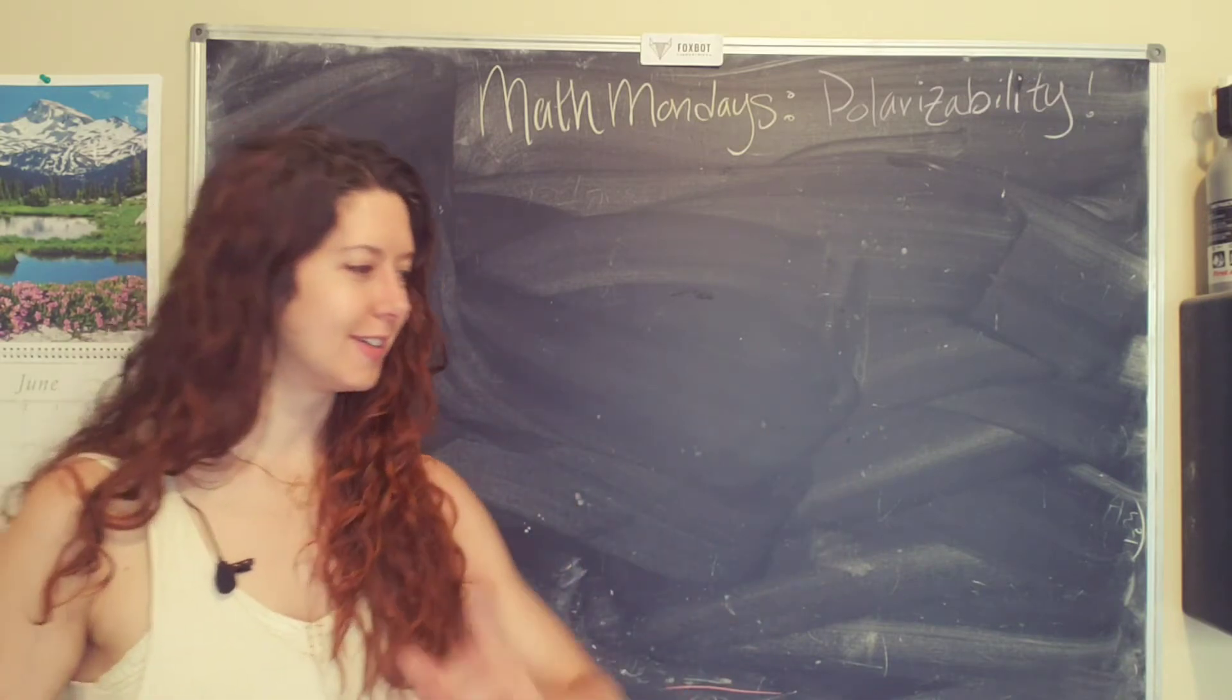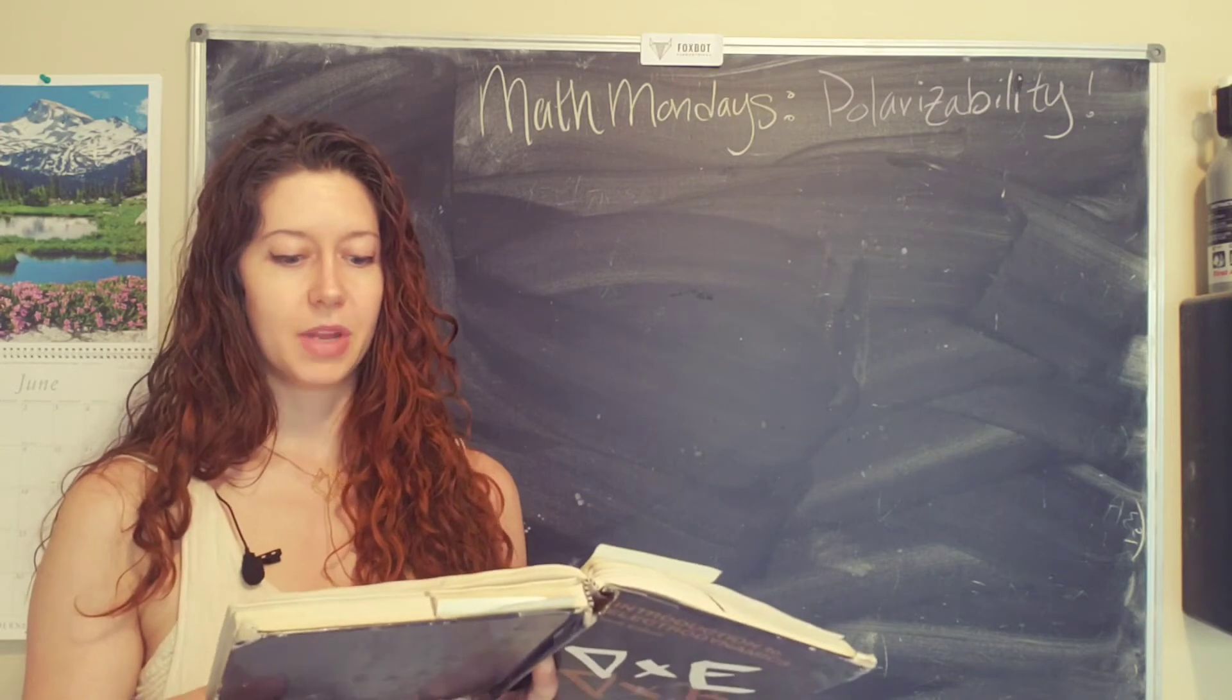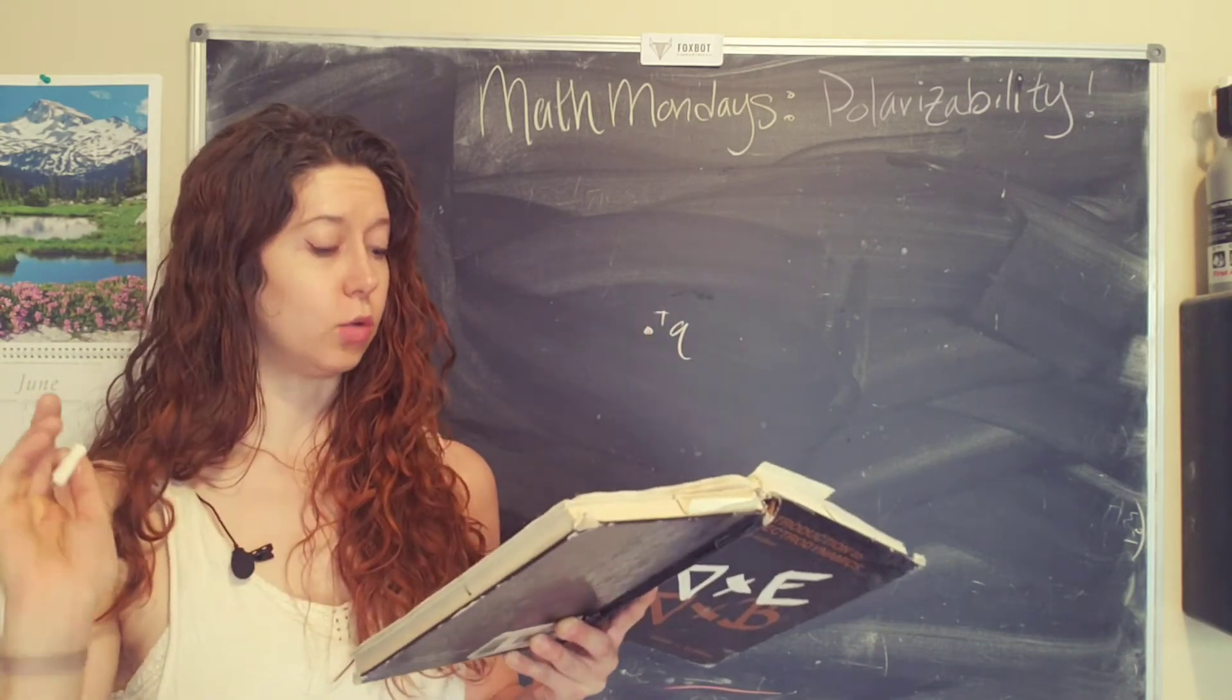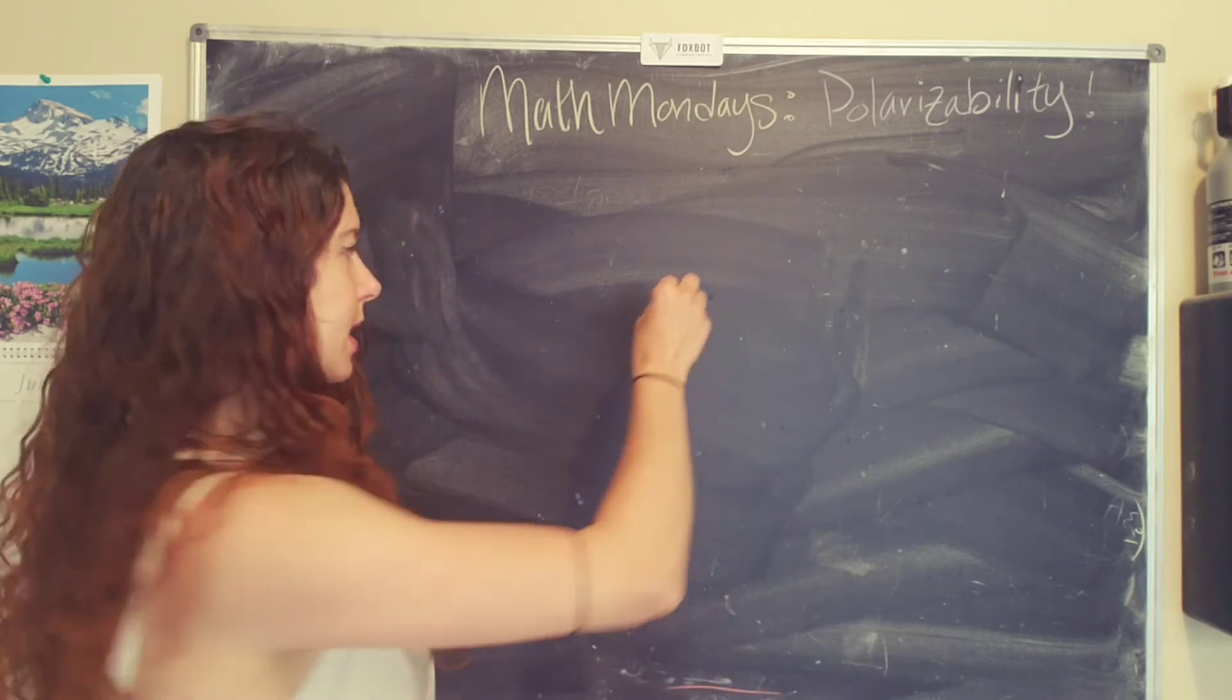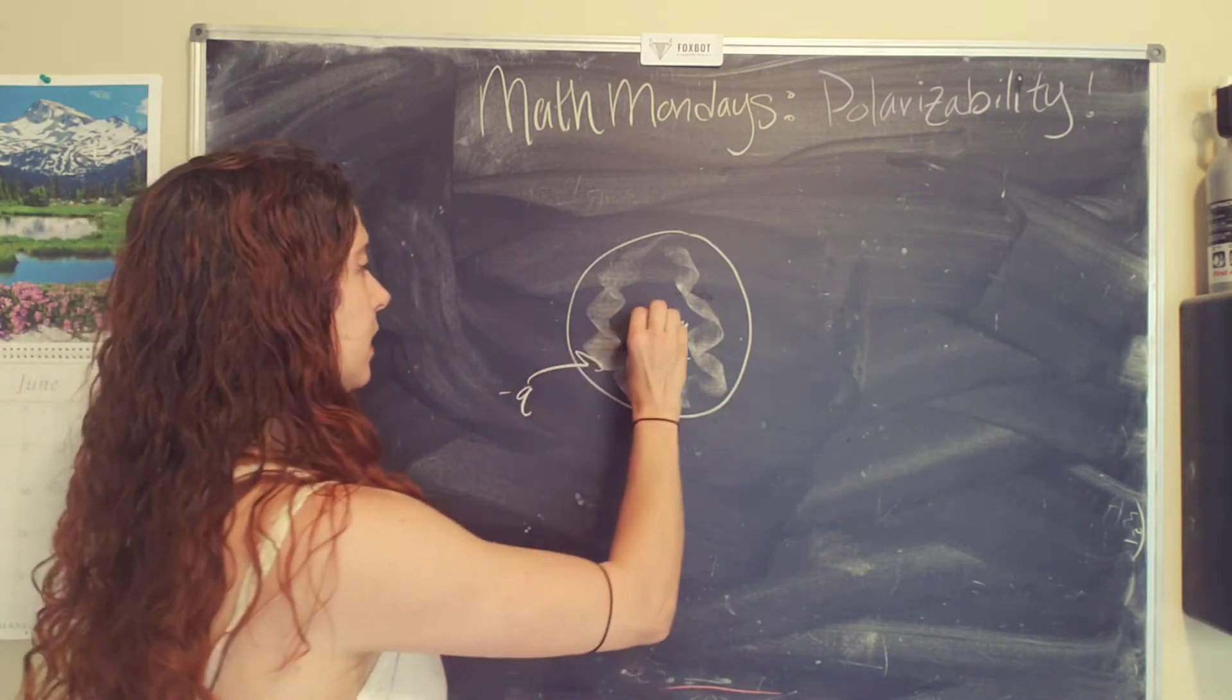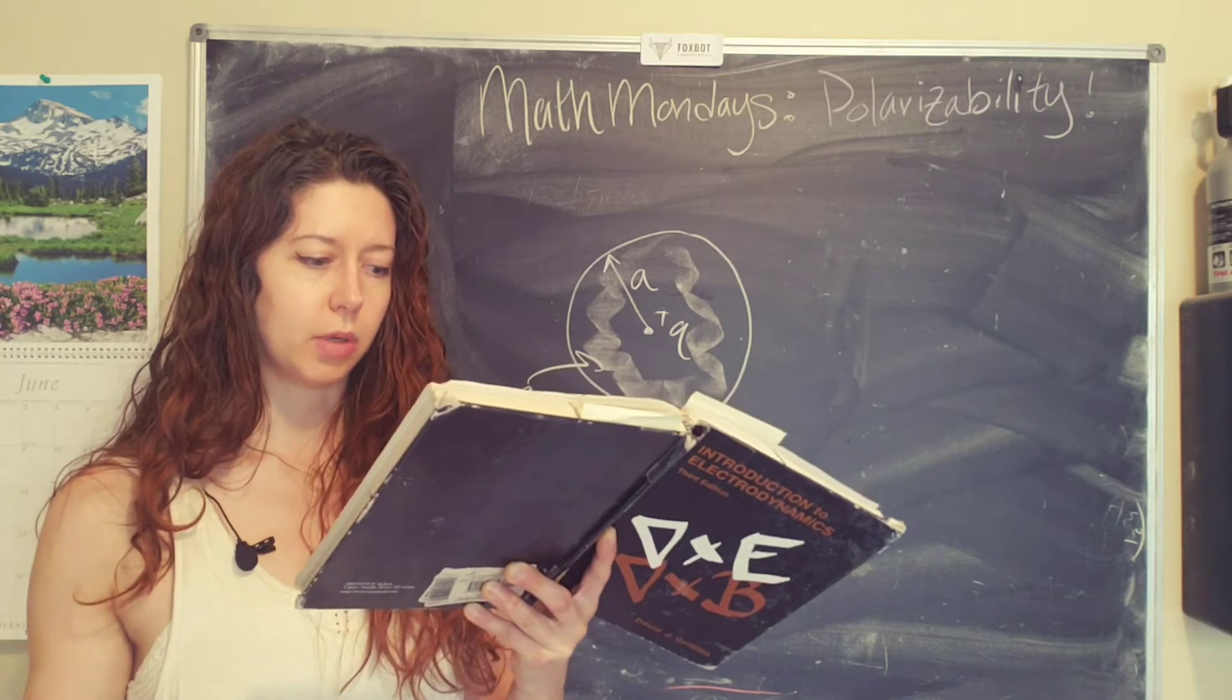Okay, so I'm going to grab my handy dandy book, and we will read our example problem. A primitive model for an atom consists of a point nucleus with charge positive q, surrounded by a uniformly charged spherical cloud negative q of radius a. This is a spherical cloud with uniform charge of negative q, and this has a radius of a. Calculate the atomic polarizability of such an atom.